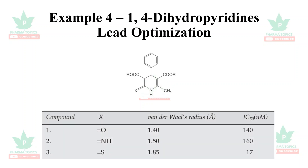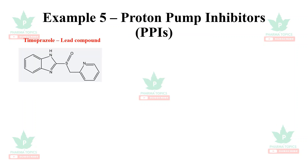In the dihydropyridine lead optimization, the X group is substituted with various groups. From the table, when substituted with =S, the van der Waals radius increases and the IC₅₀ value decreases, indicating higher potency. This is a clear example of how bioisosteric substitution drives lead optimization.